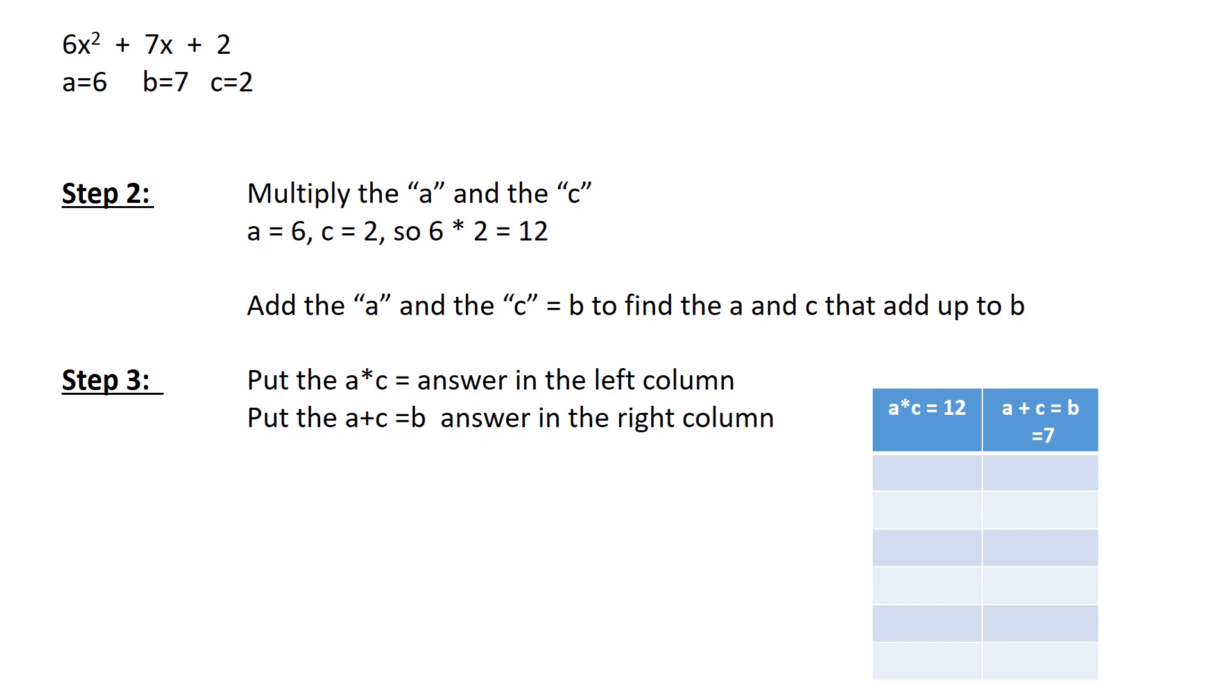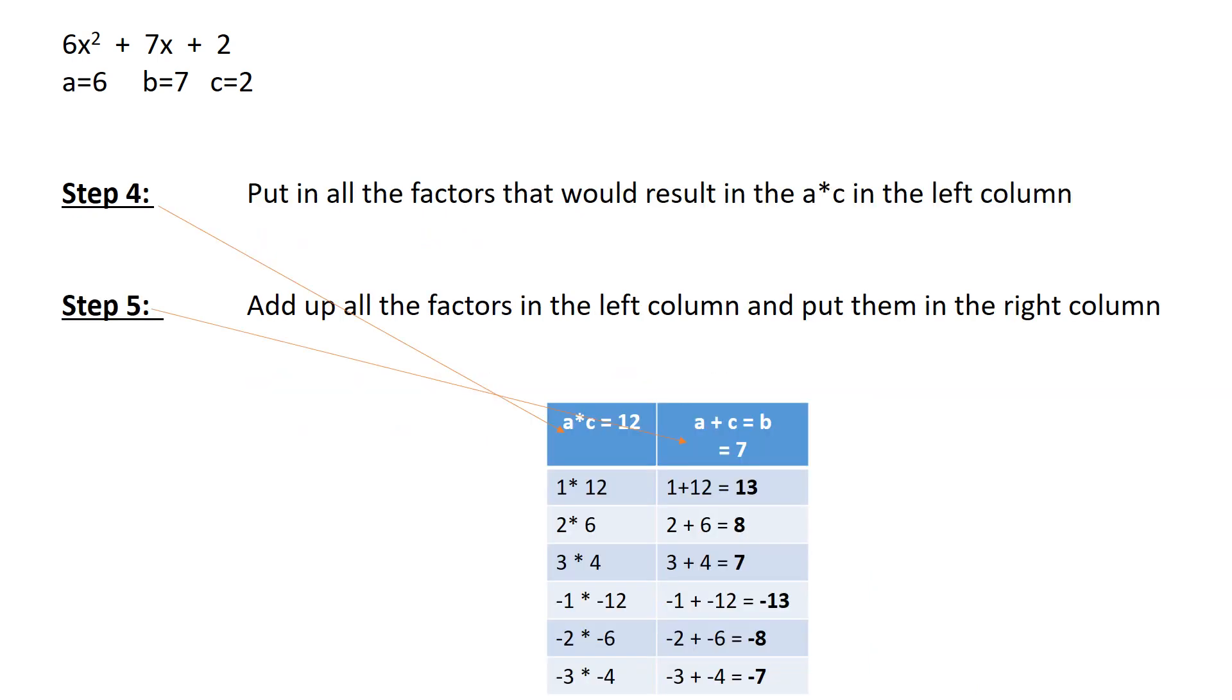So in that A times C column, we put A times C equals 12. And then on the right, the A plus C will equal B. And that's going to equal 7. That comes from the B where the 7x is.